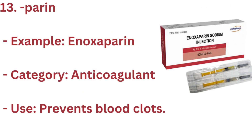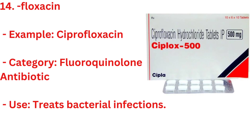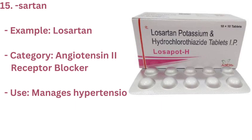13. PARIN — Example: ENOXAPARIN. Category: ANTICOAGULANT. Use: PREVENTS BLOOD CLOTS. 14. FLOXACIN — Example: CIPROFLOXACIN. Category: FLUOROQUINOLONE ANTIBIOTIC. Use: TREATS BACTERIAL INFECTIONS.